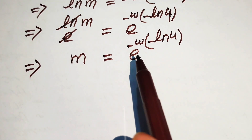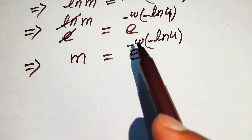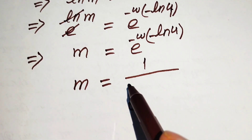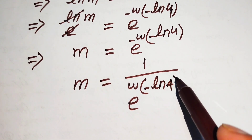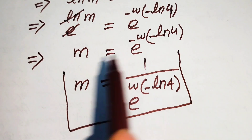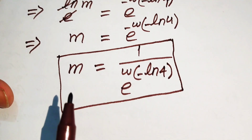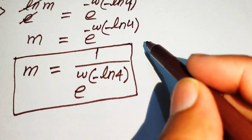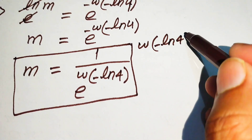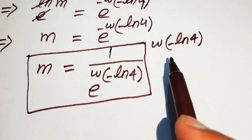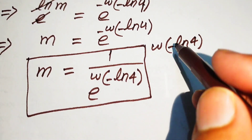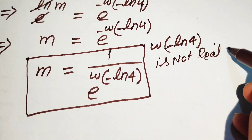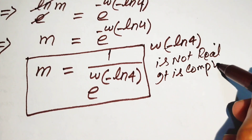The exponent of e is a negative term, so we move it to the denominator and write m equals 1 over e to the power of W of minus log 4. This is our final answer. However, this answer is not real, because the exponent W of minus log 4 is not defined for real values — it gives a complex value.